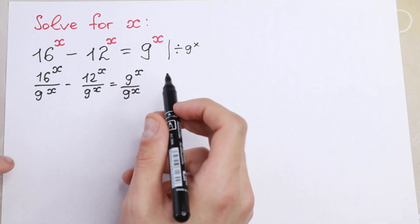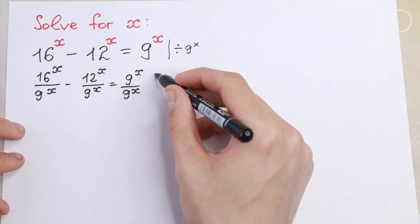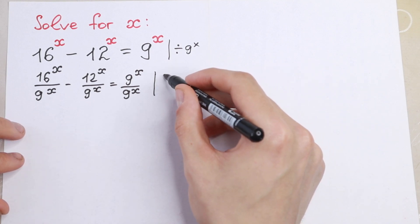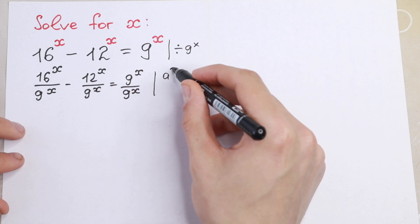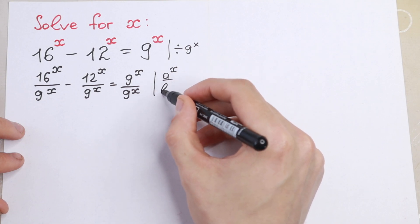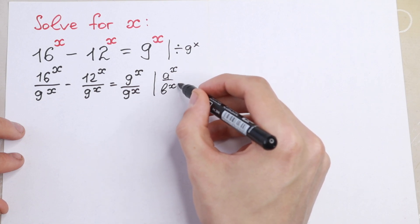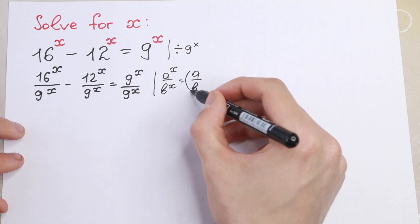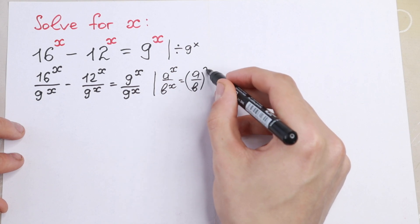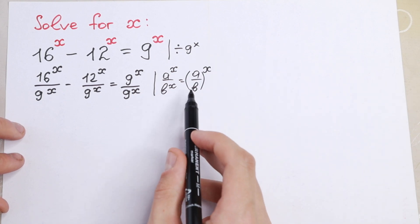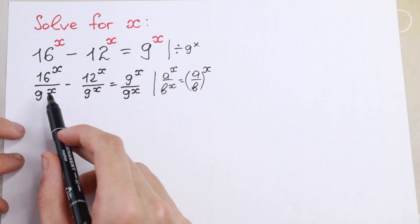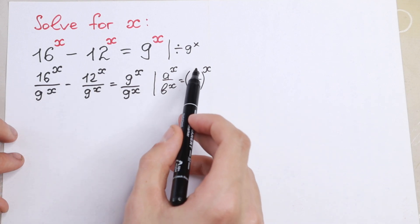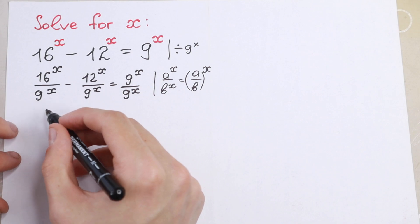We need to know a really good rule. If we have a to the power x dividing by b to the power x, we can write it as a over b, all raised to the power x in parentheses. So let's use this rule in every case, because we have all different bases and we can raise this to the power x.